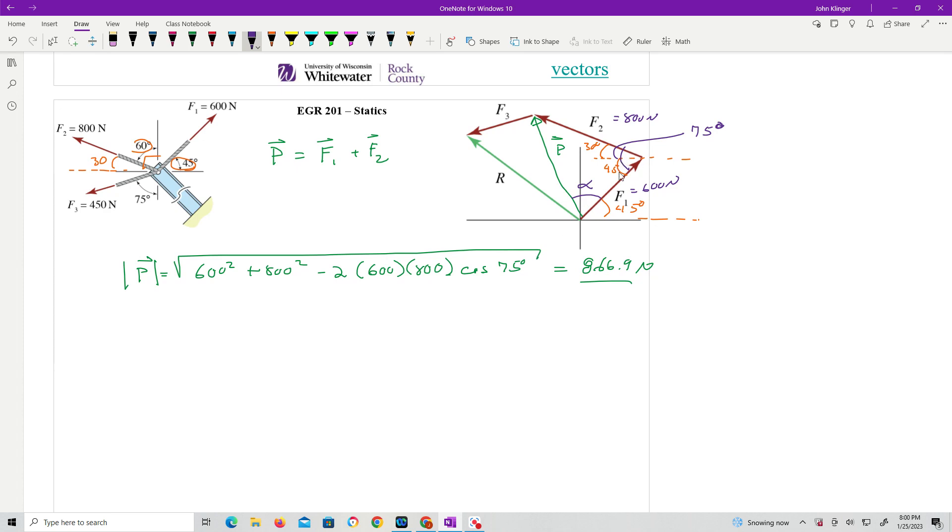Well, I know if I know this side is 75, I know this side. I can also use 800 on the opposite side to find alpha. Right, so we're going to use the law of sines. This above, of course, law of cosines.